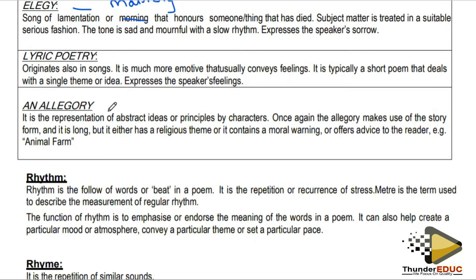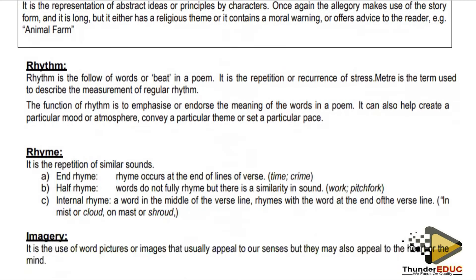Now we move on to language in poetry — rhythm and rhyme. Learners confuse these, so we need to distinguish between them. Rhythm is the flow of words or beat in a poem — it is the repetition or recurrence of stress. Meter is the term used to describe the measurement of regular rhythm. The function of rhythm is to emphasize or endorse the meaning of the words. It can also help create a particular mood or atmosphere, convey a theme or pace. When we say stress, we're talking about syllables.